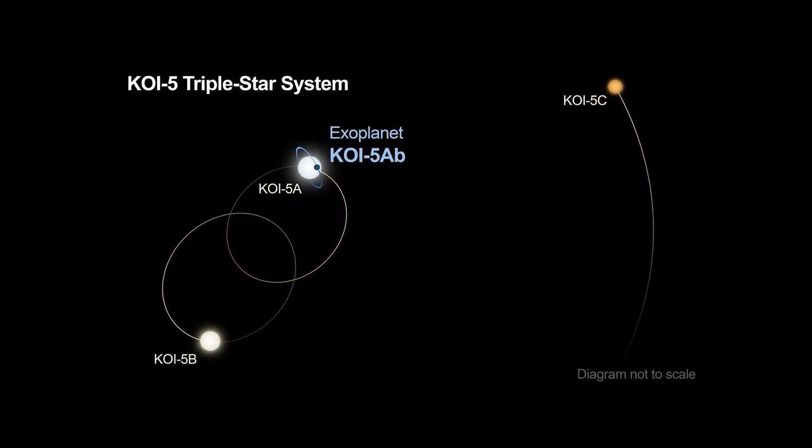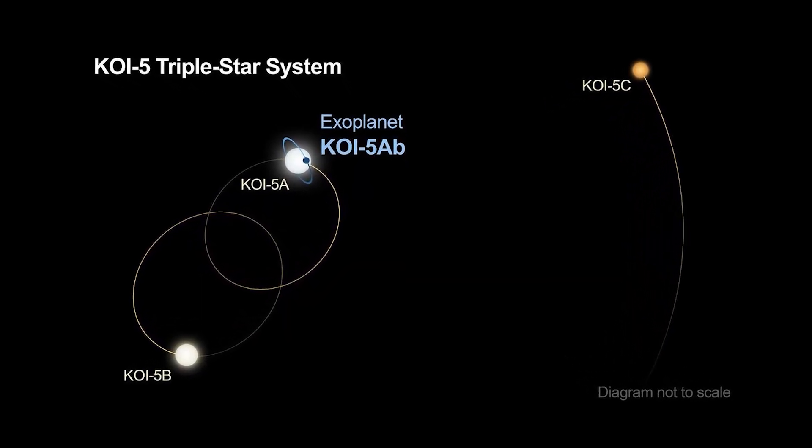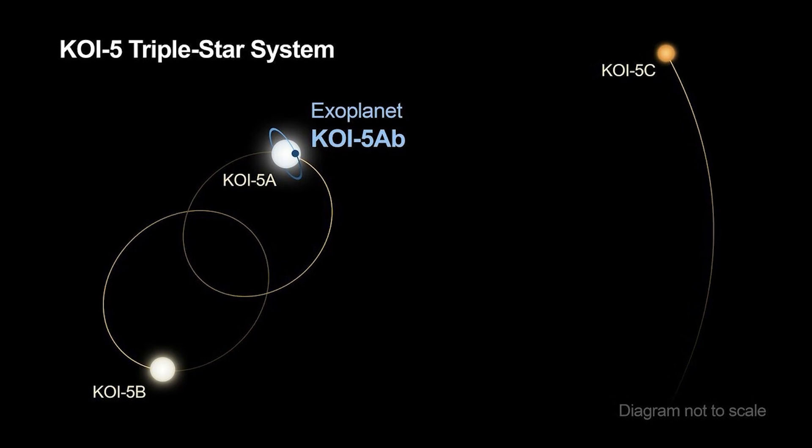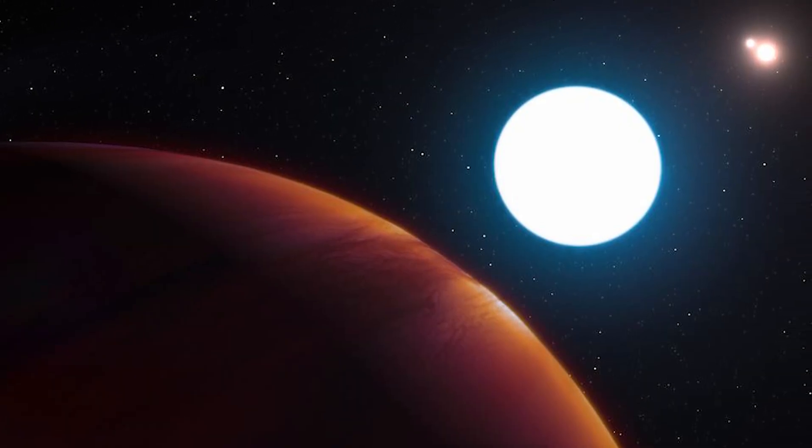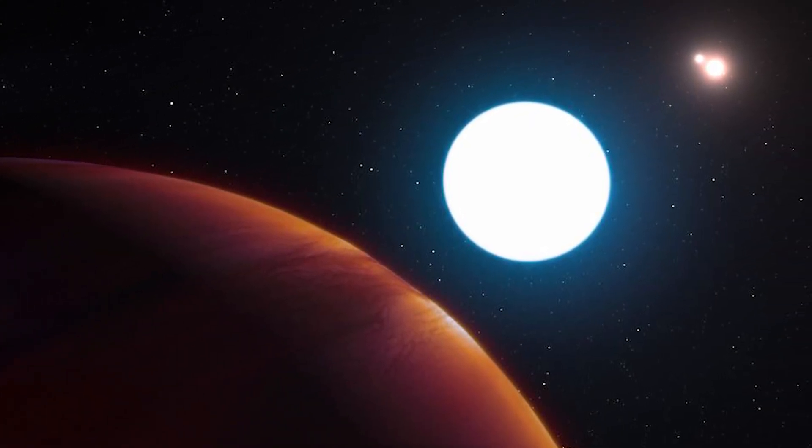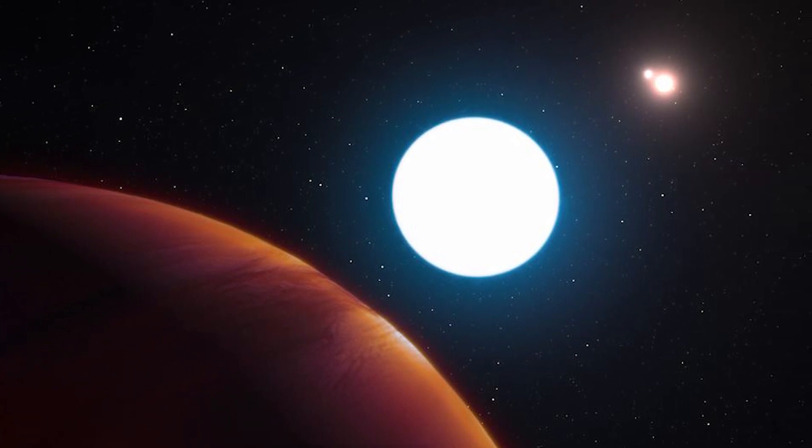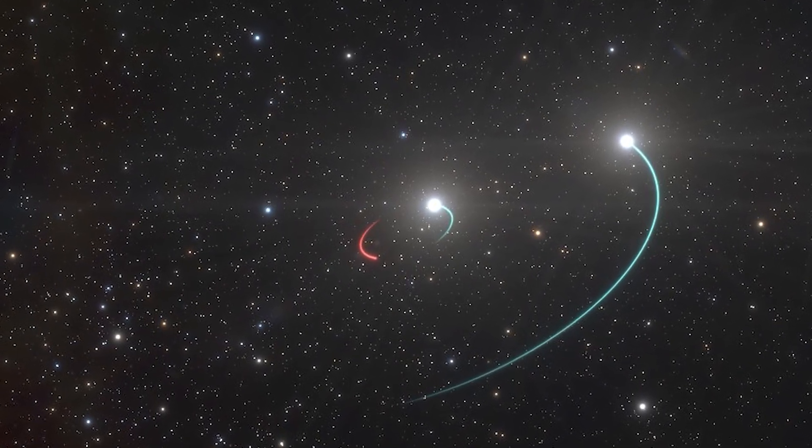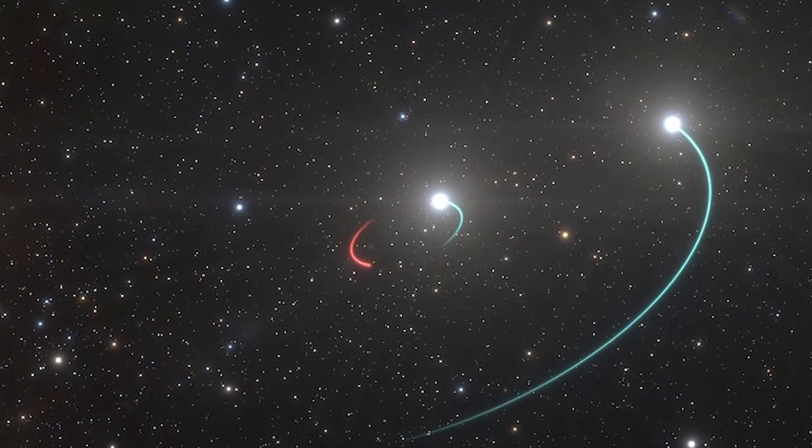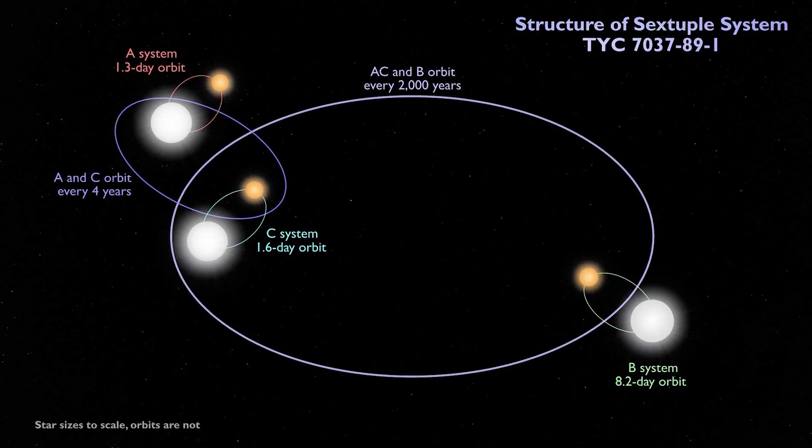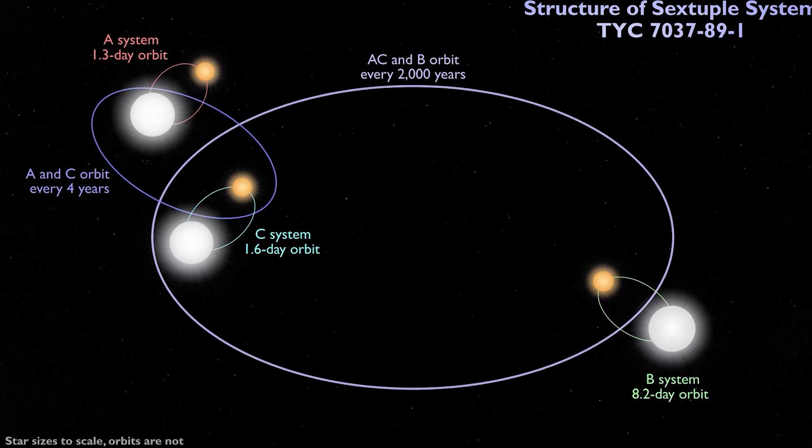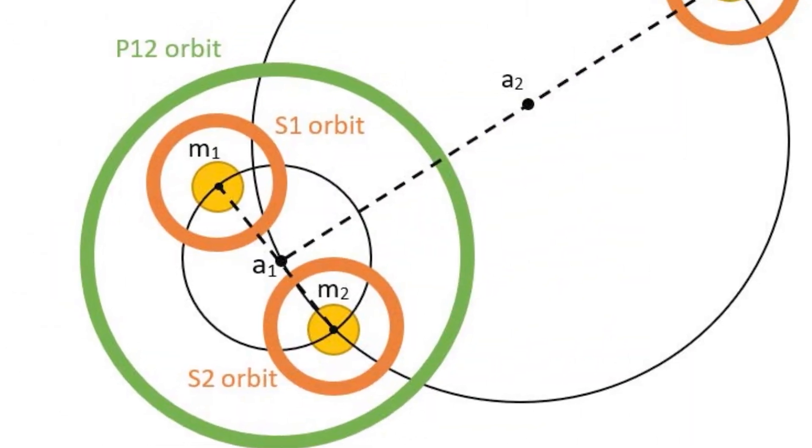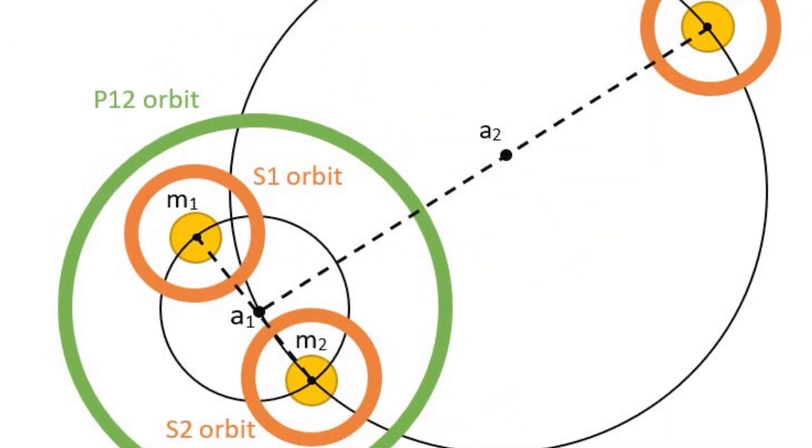Moving on to KOI-5AB, this exoplanet isn't unique because of its properties, but because of its cosmic neighborhood. This planet, about half the size of Saturn, was initially overlooked and considered almost like a story from science fiction. However, a decade later, the KOI-5 system finally got the attention it deserved. Astronomers uncovered that this was a triple star system. The planet orbits star A, which has a close companion, star B.